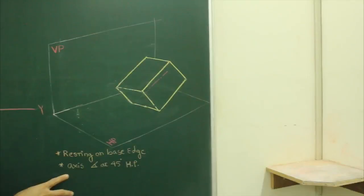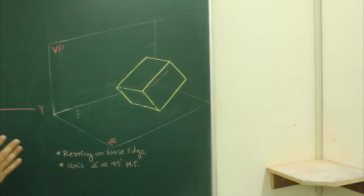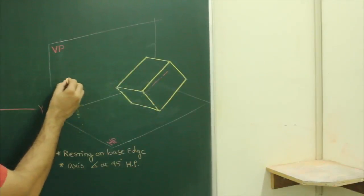We cannot draw directly with the axis inclined at 45 degrees to HP. So what we will do is first draw the axis perpendicular to HP.